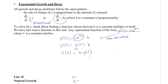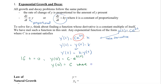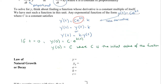Now, if our t value is equal to 0, then we have that y of 0 is equal to c times e to the power of k times 0. Remember that anything to the power of 0 is 1, so we have y of 0 is equal to c, where c is then the initial value of the function. That's when the time is 0, when we're starting. So I can now replace my c value with y of 0.